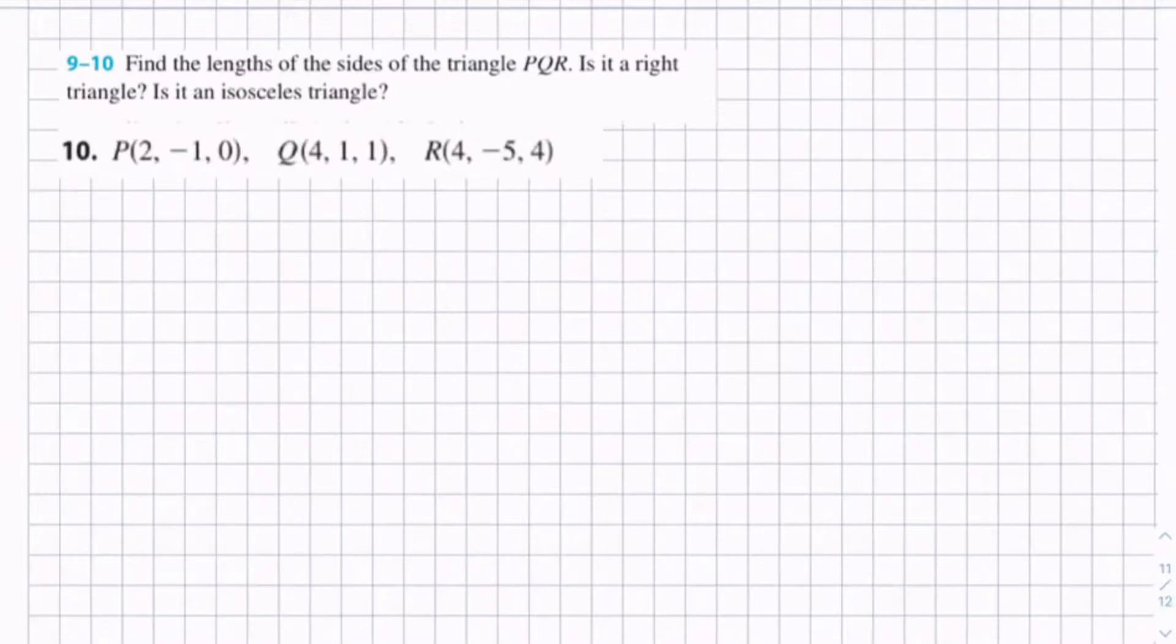So we have points (2, -1, 0), (4, 1, 1), and (4, -5, 4).